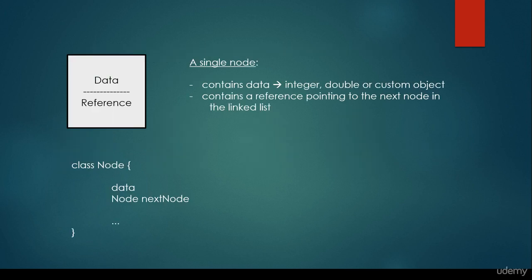So what about a single node? A single node contains two important items. First the data itself - it can be an integer, it can be a double, or it can be a custom object, whatever. And it contains a reference or a pointer pointing to the next node in the LinkedList. Of course, if it is the last node, it's going to point to a null.